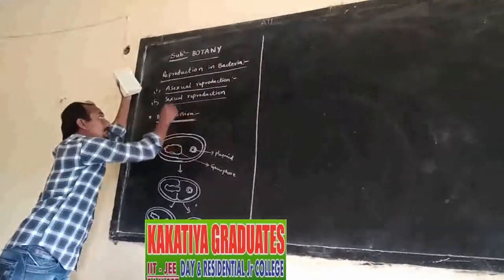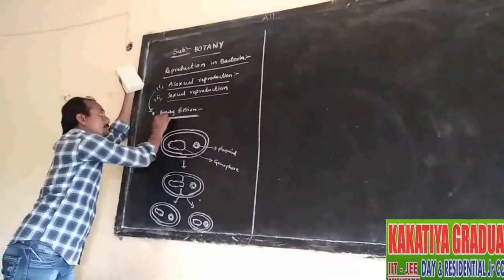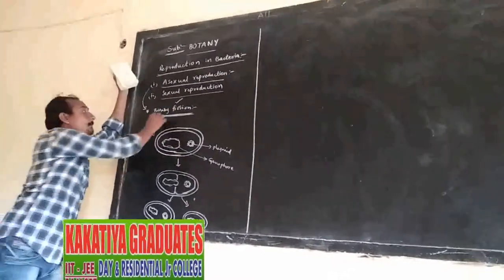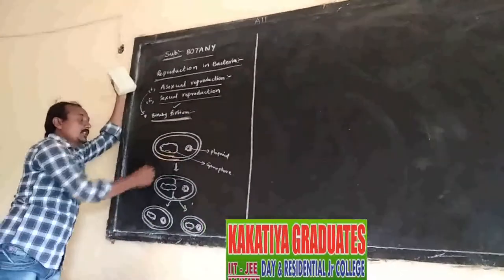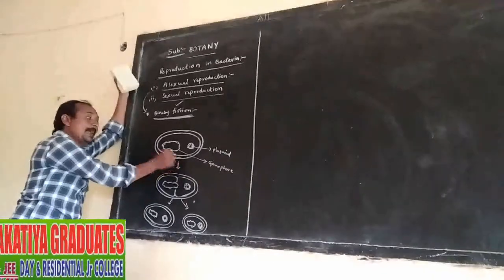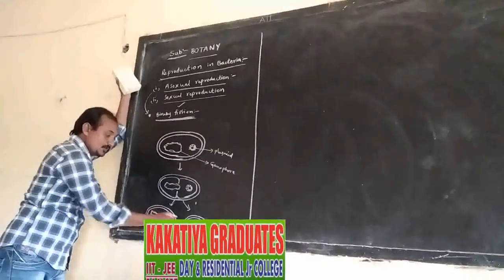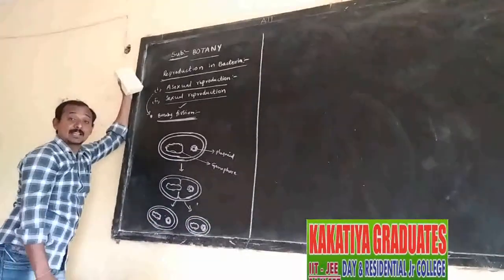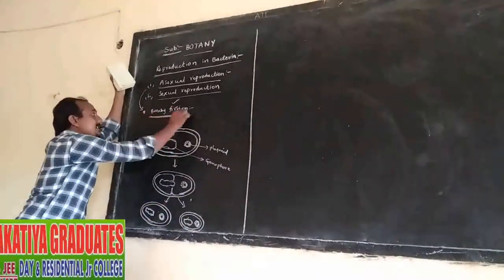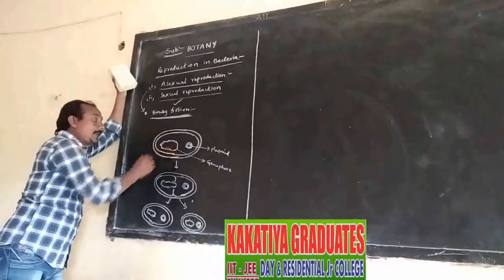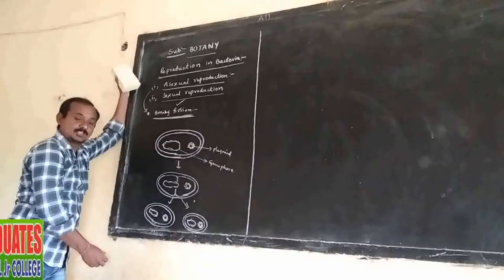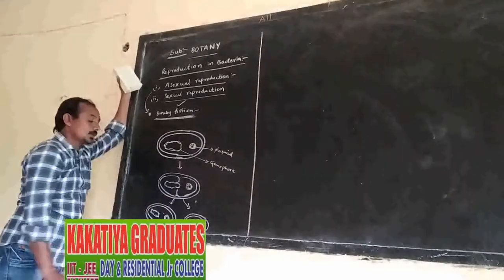In bacteria, asexual reproduction occurs by a method called binary fission. During favorable conditions, the parental bacterial cell divides and produces two genetically identical daughter cells. This process is called binary fission.